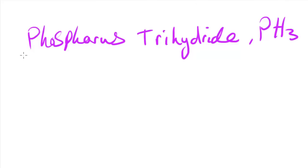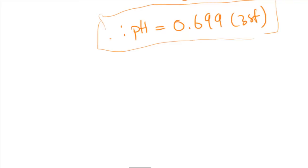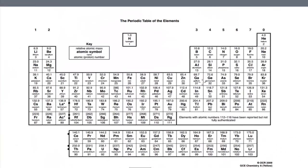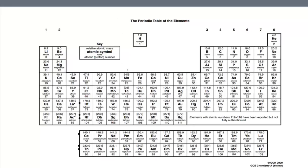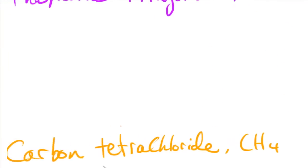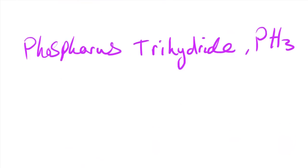The first thing I need to do is find out the number of electrons contributed by the central atom — in this case phosphorus. I can find this from the periodic table. Phosphorus is in group 5, so therefore phosphorus has 5 electrons in its outer shell. So the number of electrons is 5.